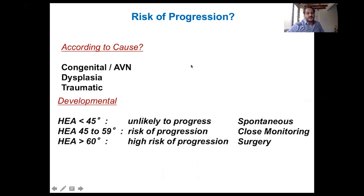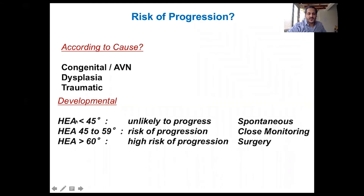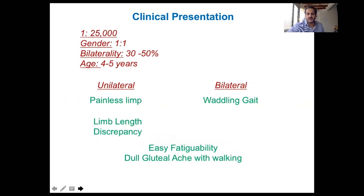Does coxa vara progress? It depends on the cause. For congenital cases and cases with avascular necrosis, it usually progresses. In dysplastic cases there is variable progression; in traumatic cases such as malunion, it may remodel. For developmental coxa vara, the risk of progression depends on the Hilgenreiner epiphyseal angle: if less than 45 degrees, progression is unlikely and spontaneous improvement may occur; between 45–60 degrees, close follow-up is important; more than 60 degrees carries a high risk of progression and requires surgery.